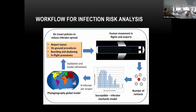Here's a workflow: given airport layout, on-ground procedures, and all these things, you can model movement in the plane and in the airport. Then you can estimate the number of contacts based on the trajectories, and feed it to an infection spread model to get the number of infected people — either in a plane, in a security queue, or in the airport.